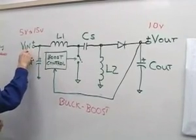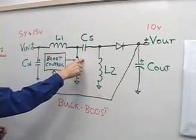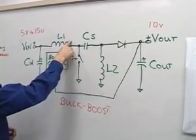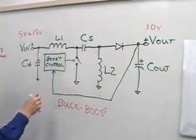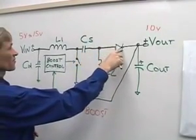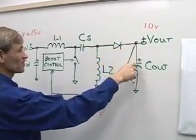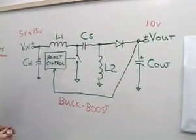The operation of the SEPIC is such that when the primary switch is energized, energy is stored in the input inductor and in the output inductor, which is connected by the coupling capacitor. When the switch is open, energy is transferred through the coupling capacitor, the rectifier diode, and to the output capacitor.